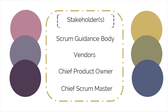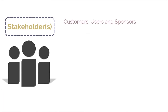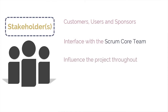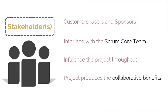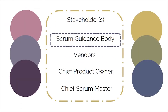The first non-core role is the stakeholder or stakeholders. This is a collective term that includes customers, users, and sponsors. They frequently communicate with the Scrum core team and influence the project throughout its development. Most importantly, it is for the stakeholders that the project produces the collaborative benefits.